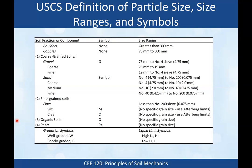For silt, there is no specific grain size range — you use Atterberg limits. The fines are the fraction smaller than the number 200 sieve (less than 0.075 mm), but within those fines, we don't use grain size anymore — we use Atterberg limits. Since S was already taken for sand, we use M as the symbol for silt.